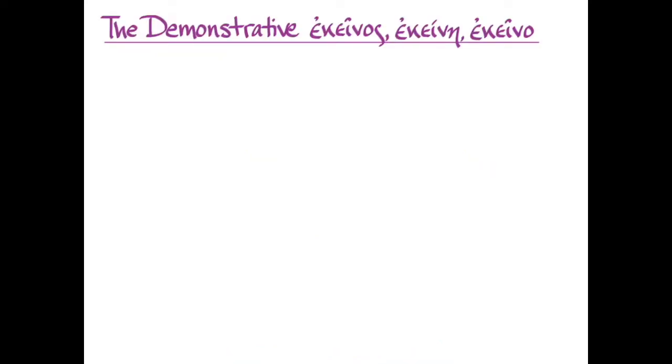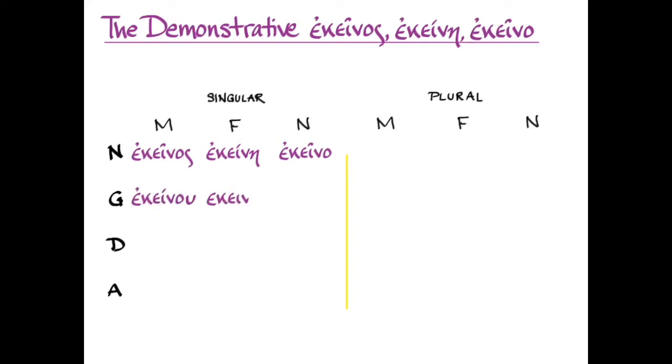The first way to think about ἐκεῖνος is as a demonstrative adjective, and like any adjective, we need to be able to decline it so that it can agree with whatever it's modifying in case, number, and gender. So here is the declension of ἐκεῖνος, ἐκείνη, ἐκεῖνο. That's the nominative singular: ἐκεῖνος, ἐκείνη, ἐκεῖνο. Genitive: ἐκείνου, ἐκείνης, ἐκείνου. Dative: ἐκείνῳ, ἐκείνῃ, ἐκείνῳ. Accusative: ἐκεῖνον, ἐκείνην, ἐκεῖνο.